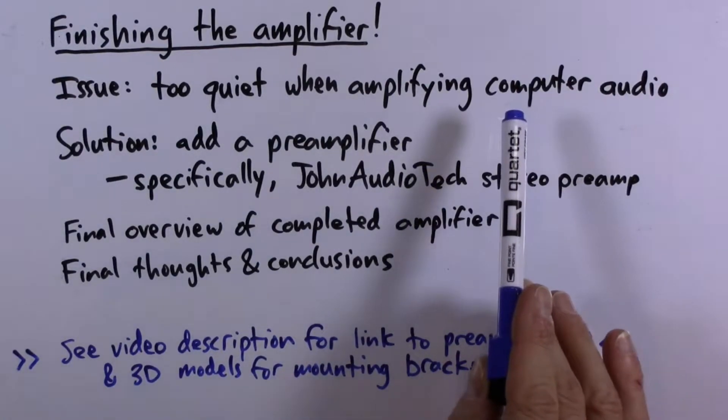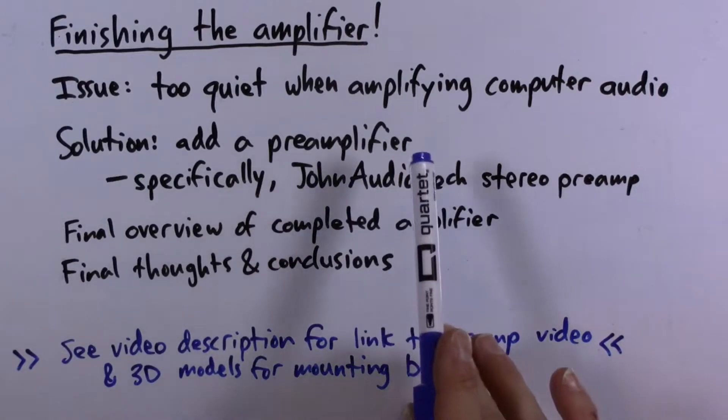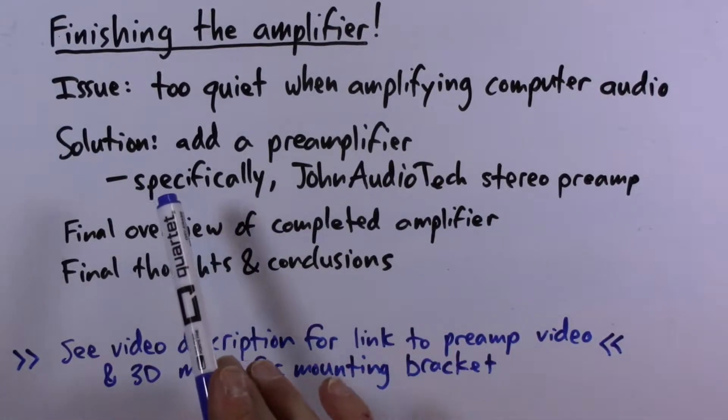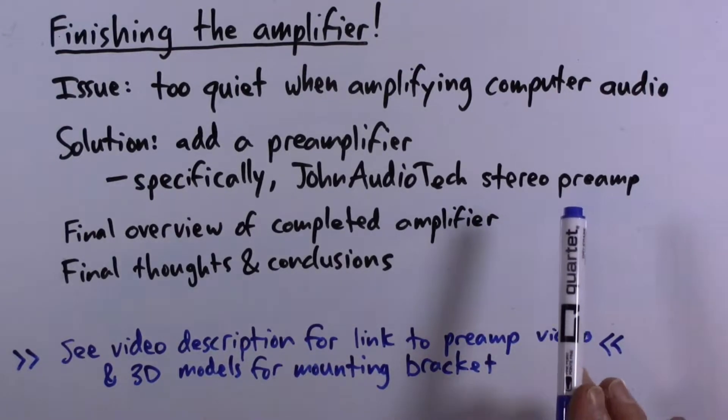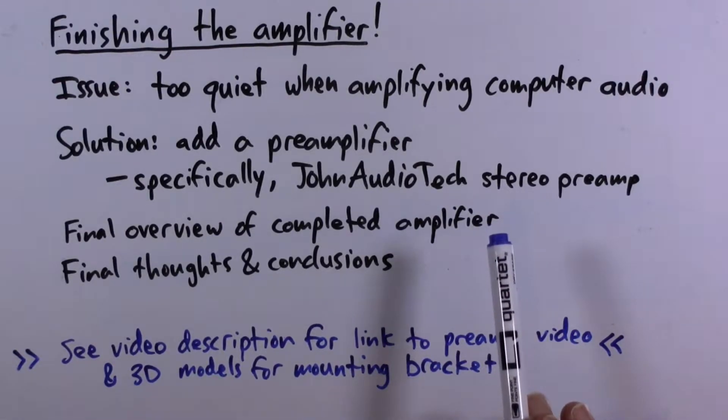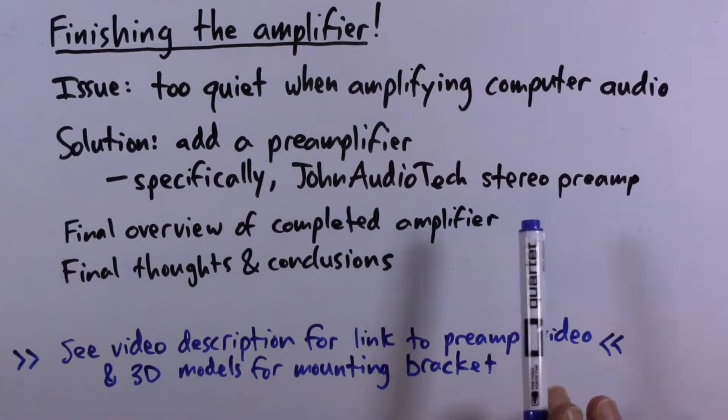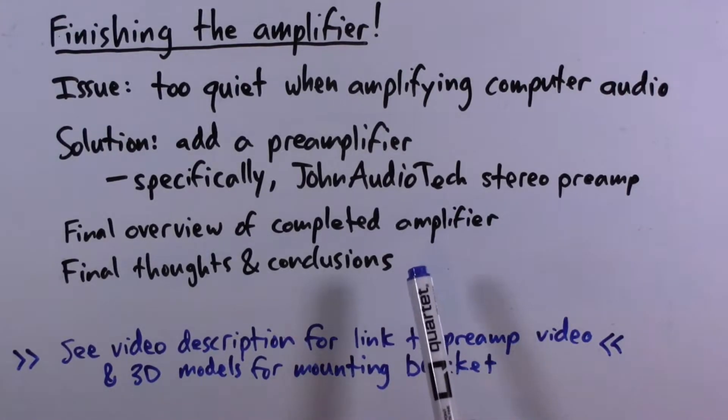As a way of solving this problem, we are going to add a preamplifier, and specifically we will add the John AudioTech stereo preamp. There is a link to his video about this preamplifier in the video description. That should boost the signal levels and allow us to get reasonable volumes out of the amplifier modules. Once we've got that working, I'll give you a final overview of the completed amplifier including the enclosure and offer a few final thoughts and conclusions. We will be printing some mounting brackets using a 3D printer, and the models for those mounting brackets are also linked from the video description.